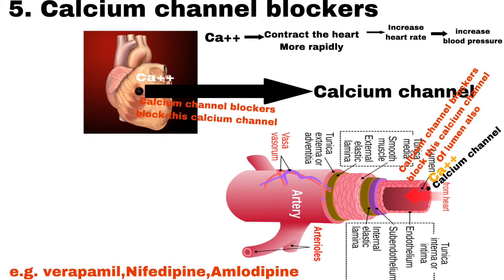In blood vessels, calcium channels allow calcium to enter the cell and cause contraction, making blood vessels narrow. By blocking this calcium channel, it reduces the intracellular calcium and hence the blood vessel will be dilated, leading to reduced blood pressure. Examples of calcium channel blockers are Verapamil, Nifedipine, Amlodipine and Diltiazem.